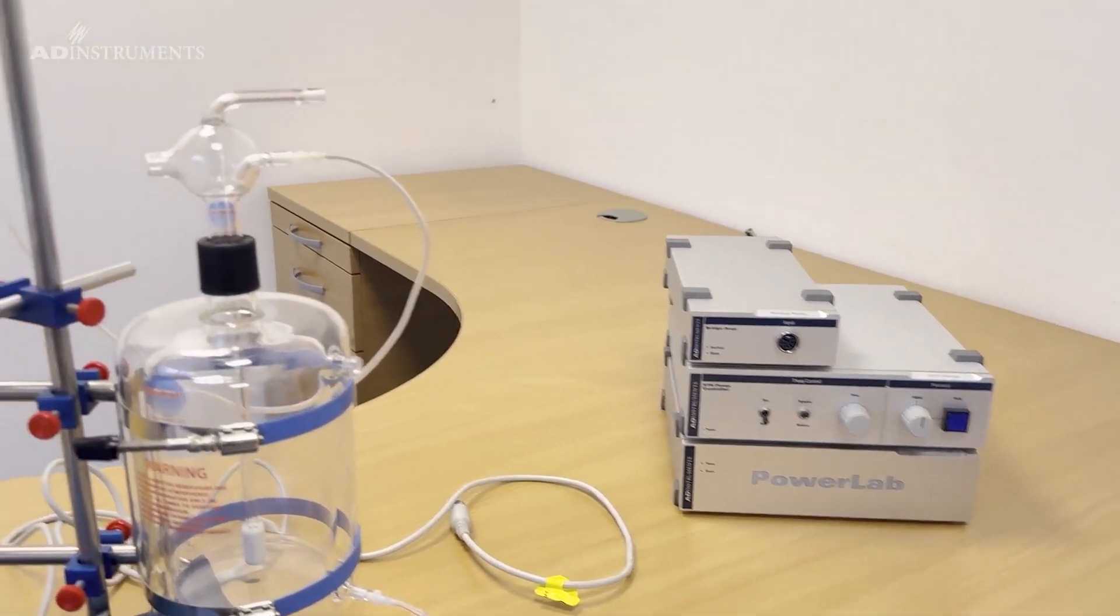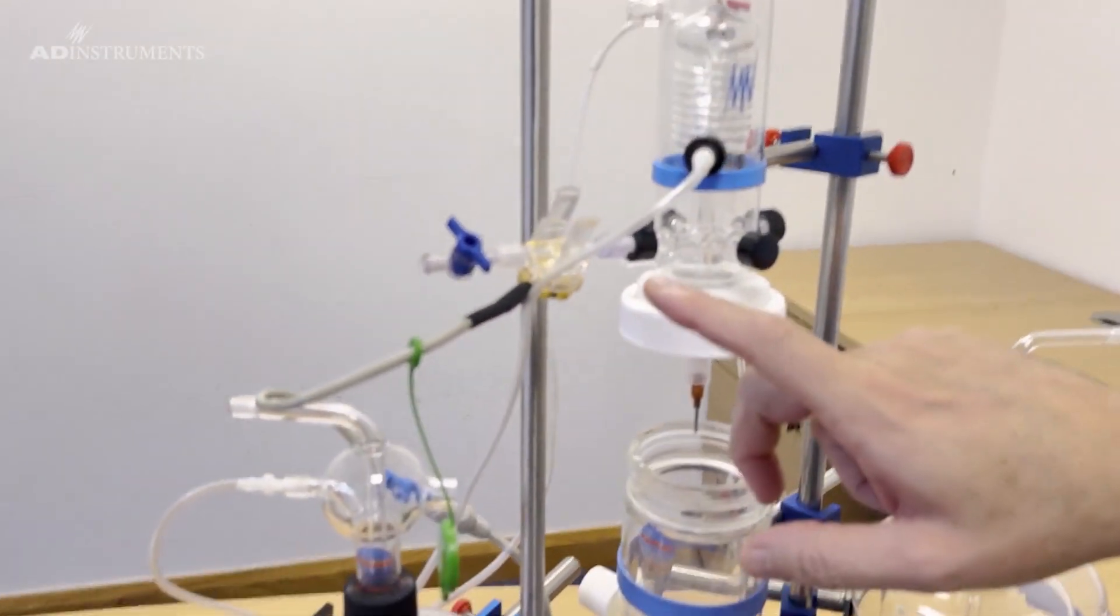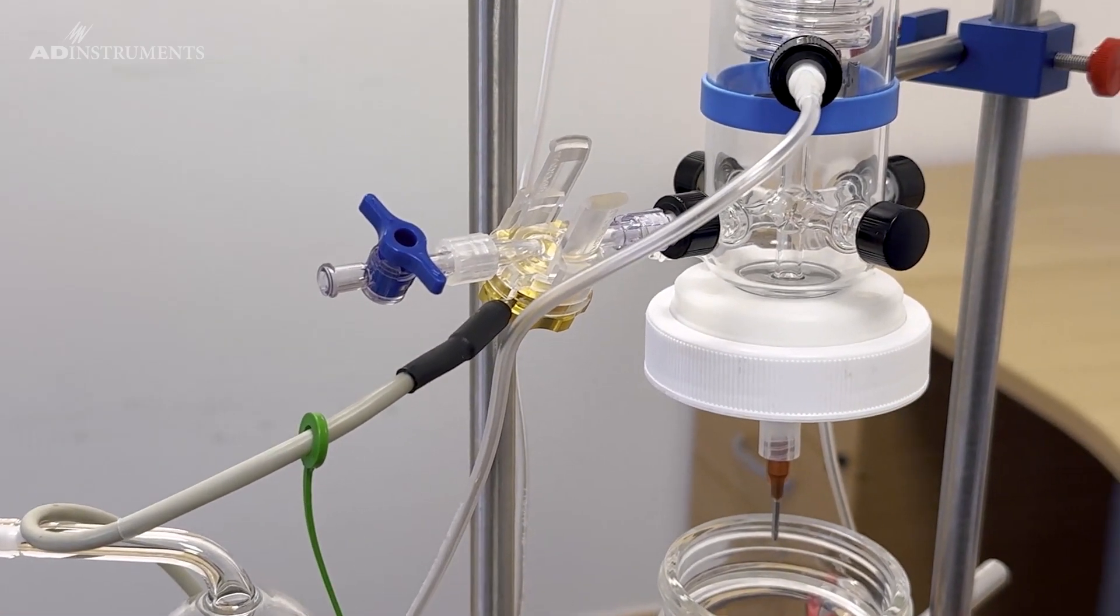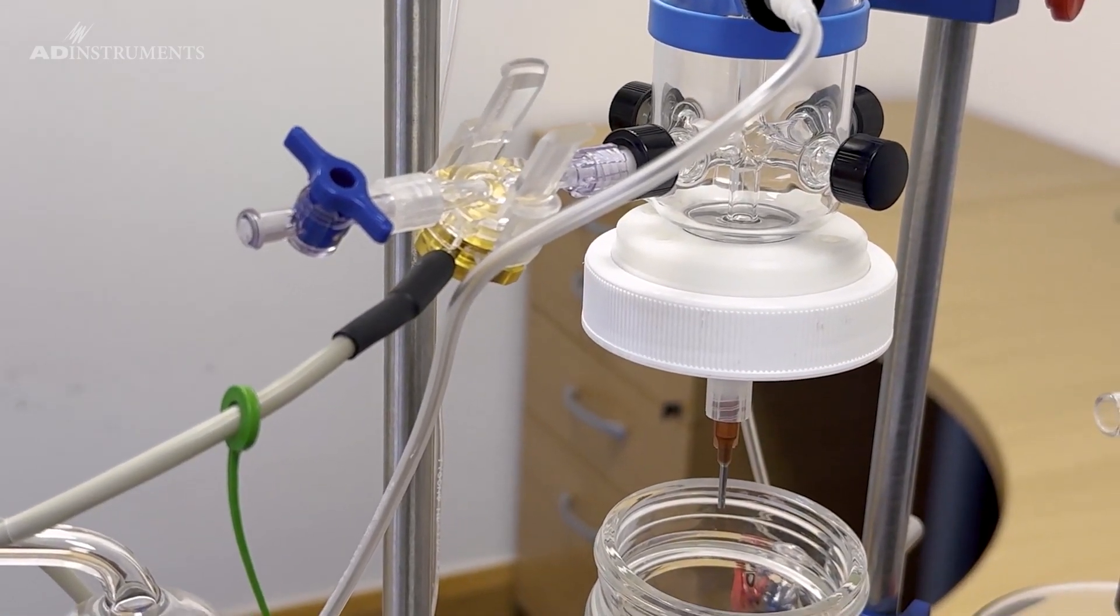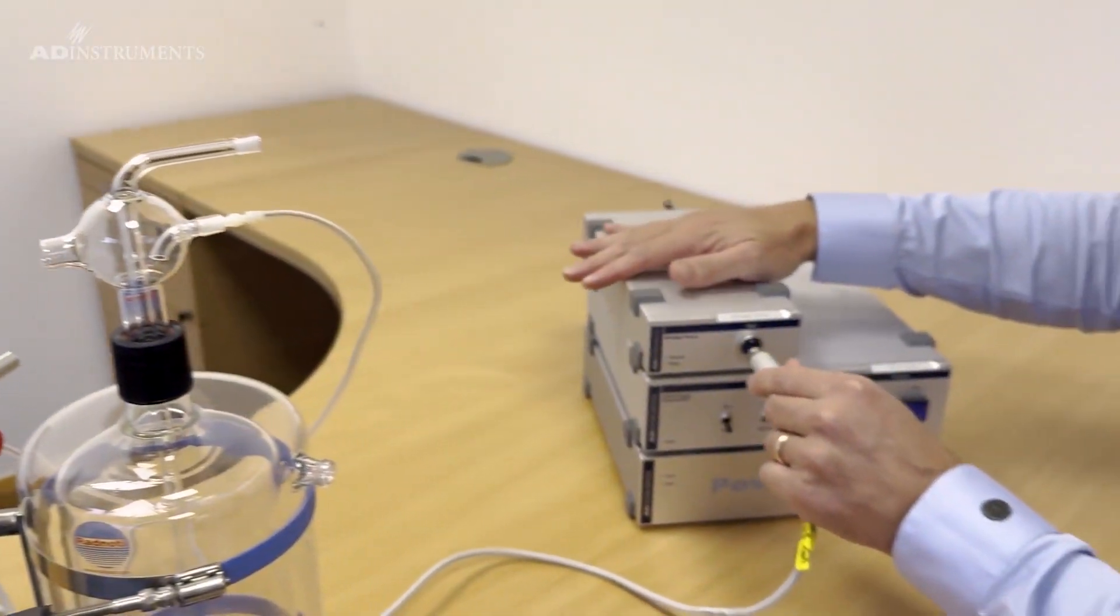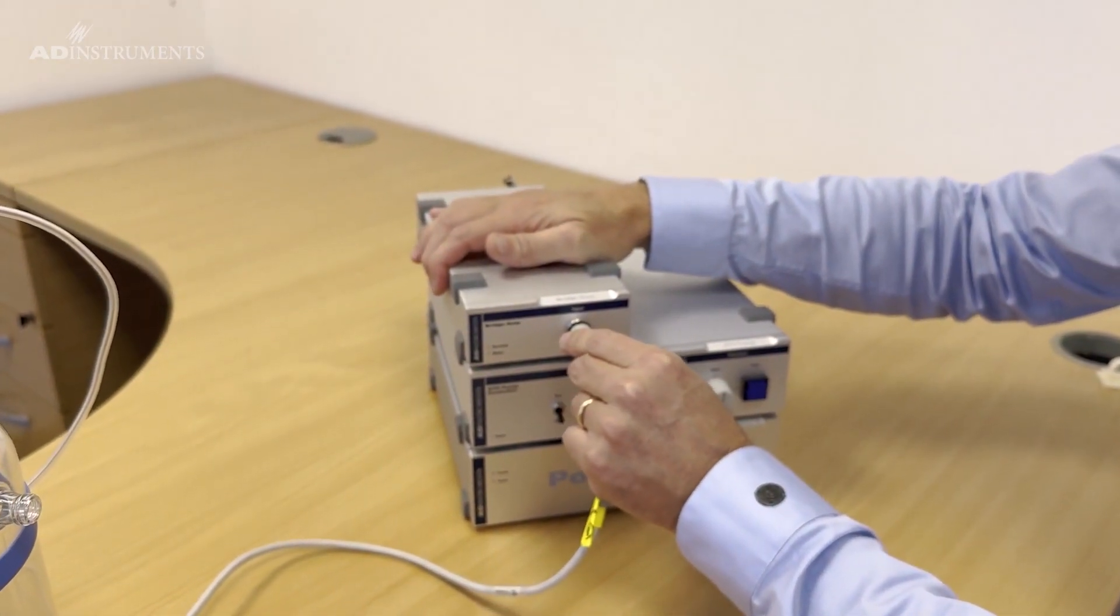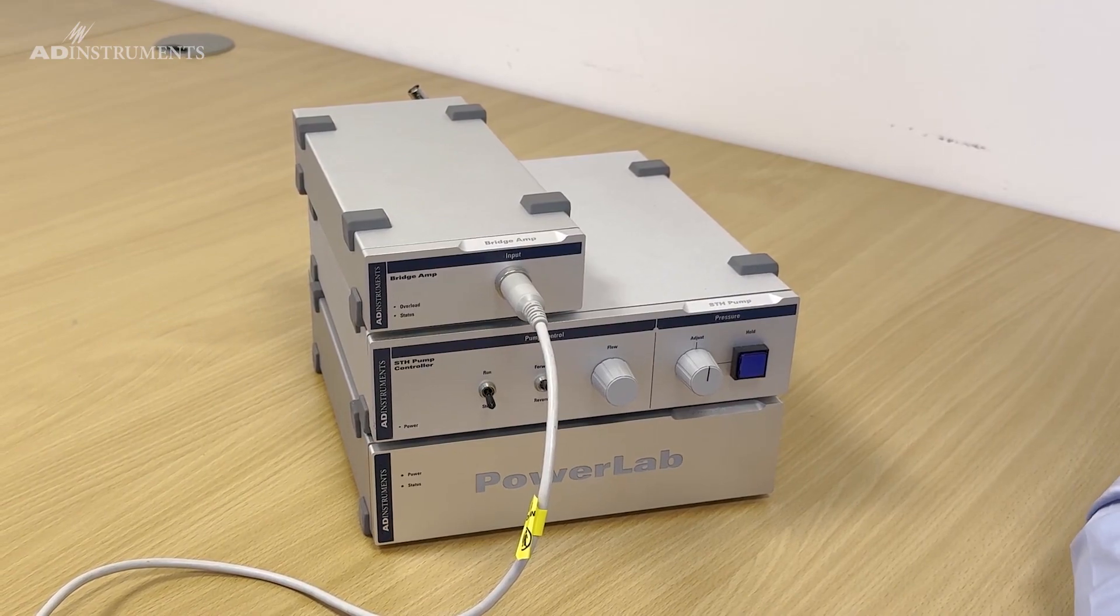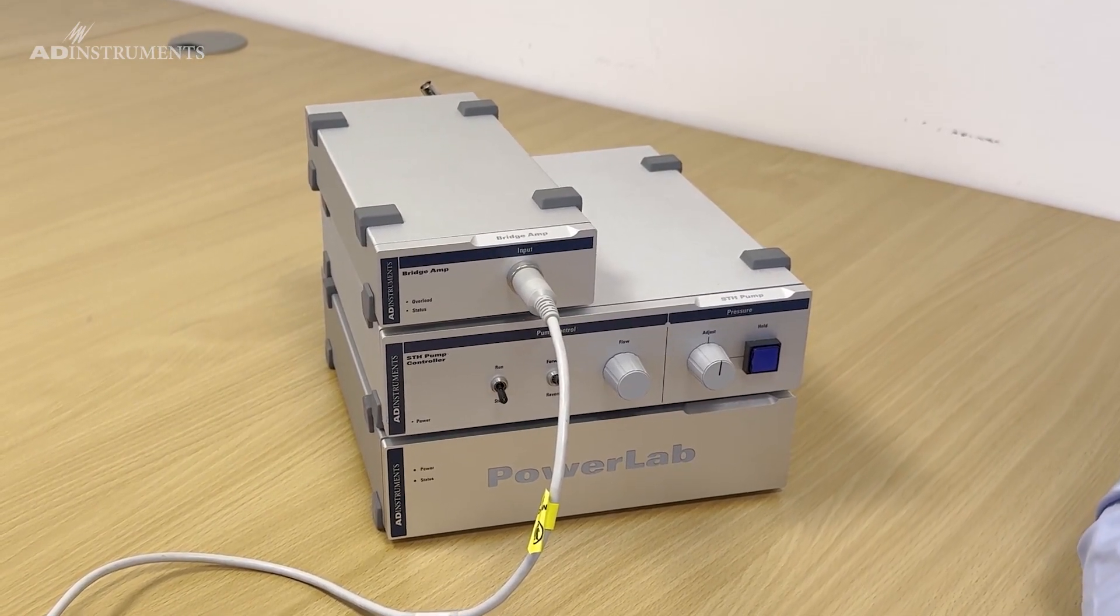To measure the perfusate pressure we require a physiological pressure transducer. This is connected to one of the four ports so that it's as close as possible to the heart. This pressure transducer is then connected to the bridge amp. If you need to know how to calibrate the pressure transducer we have some videos on our website.